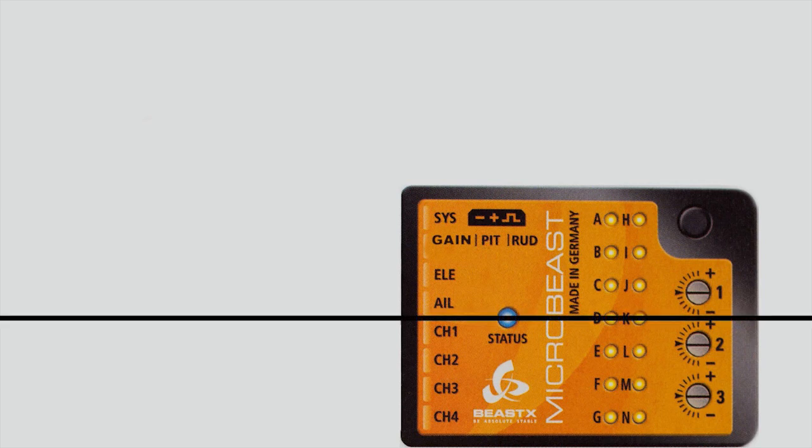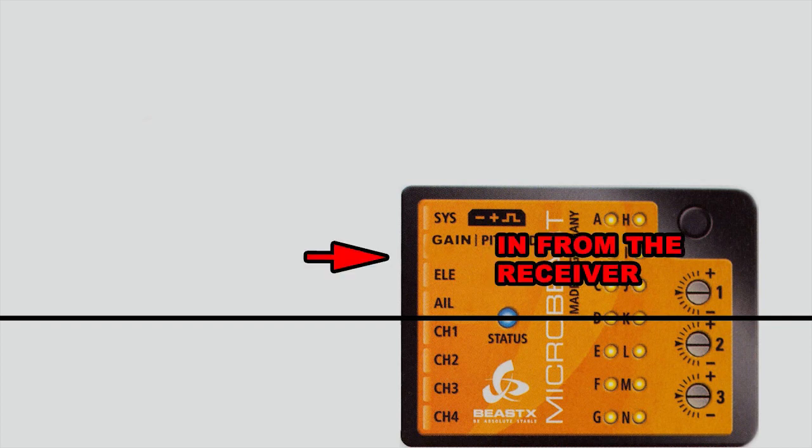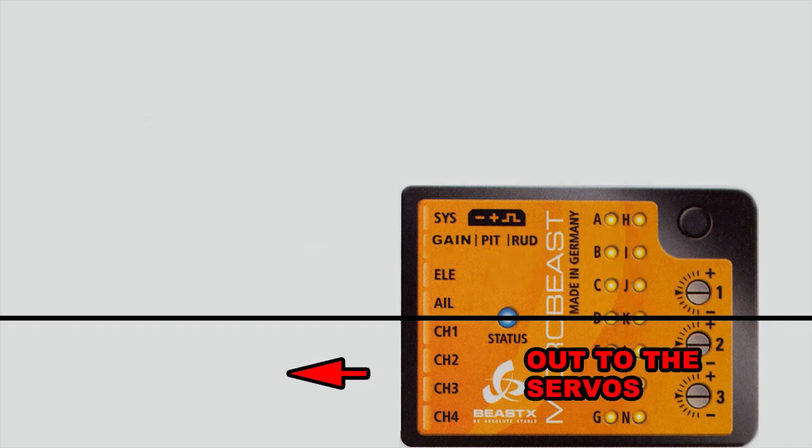This unit can be divided into two halves. The top half - everything on the top half comes in from the receiver, and everything on the bottom half goes out to the servos.